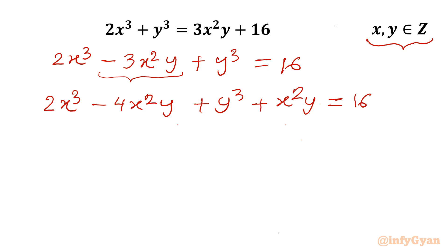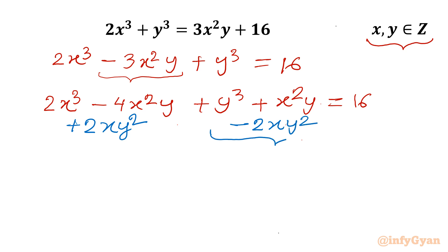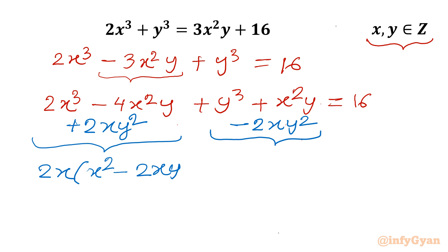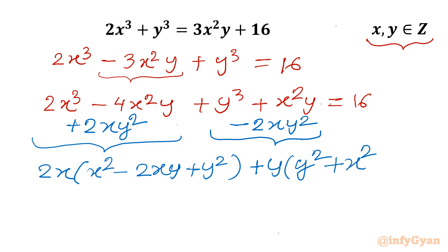Now I will use one algebraic manipulation step: I will add and subtract 2xy². So we have 2x³ minus 4x²y plus 2xy² plus x²y minus 2xy² plus y³ equal to 16. I will take 2x common from the first three terms, giving x² minus 2xy plus y² in the bracket, and take y common from the remaining three terms, giving y² plus x² minus 2xy.